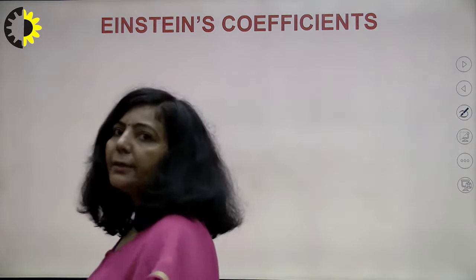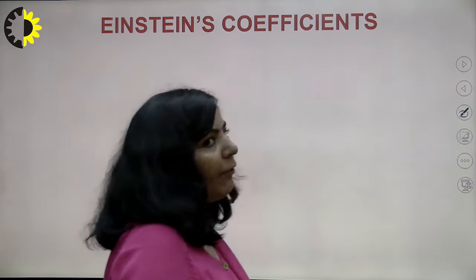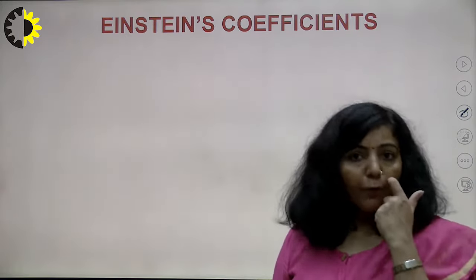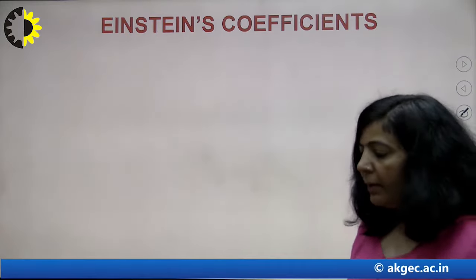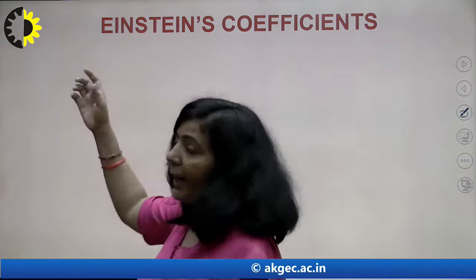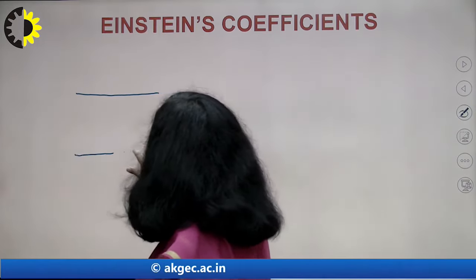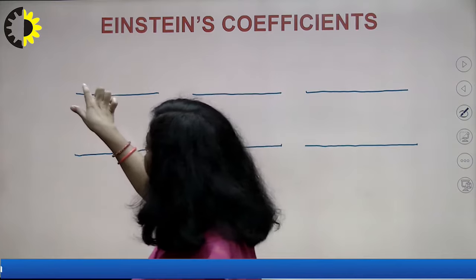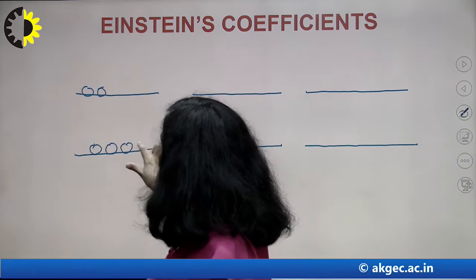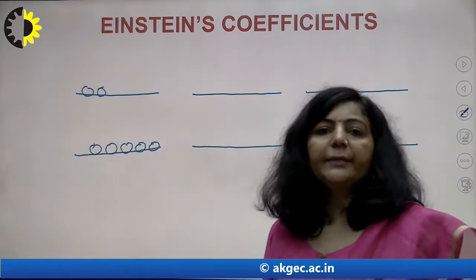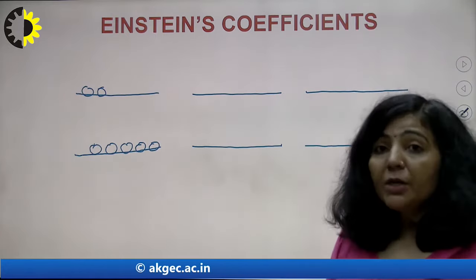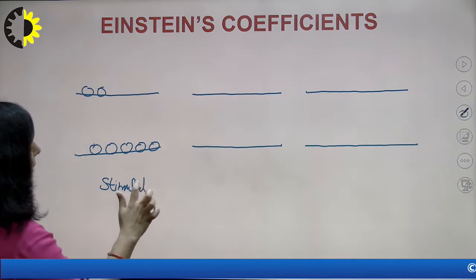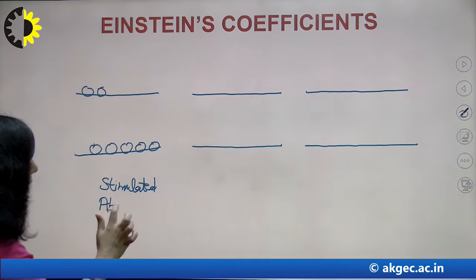The next topic is Einstein coefficients. After describing the Einstein coefficients, we will derive a relationship between them. To understand Einstein coefficients, we need to revisit the three processes involved in laser amplification. There are three processes: stimulated absorption, spontaneous emission, and stimulated emission. Let us have a quick review of stimulated absorption.